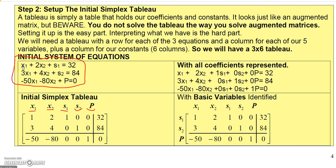Reading across the coefficients: my first equation has 1x1 plus 2x2 plus 1·S1, no S2 so I put 0, no P so I put 0, and the constant is 32. Second equation: 3x1 plus 4x2, no S1 so put 0, 1·S2, no P, and the constant is 84. The third equation goes on the bottom, separated by a horizontal line: negative 50·x1, negative 80·x2, no S1, no S2, 1·P, and the constant is 0.